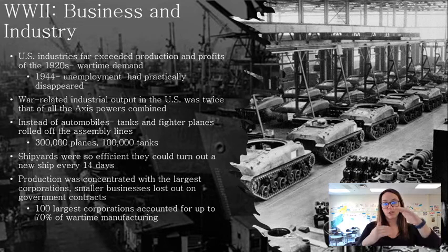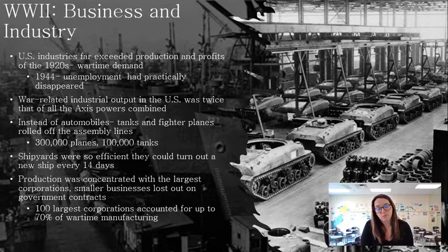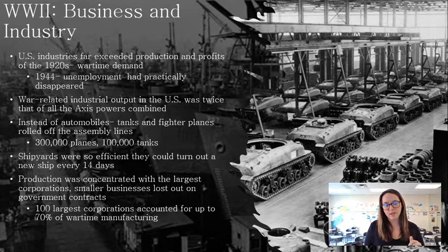Labor unions and large corporations agreed not to strike during the war as a patriotic duty, but workers became disgruntled seeing how high corporate profits were while their wages stayed frozen. There was talk of a coal strike, prompting Congress to pass the Smith-Connally Anti-Strike Act. FDR vetoed it as a labor man, but ironically used a similar measure in 1944 when a huge railroad strike threatened the war effort, using the military to end the strike.